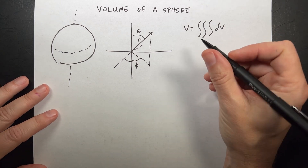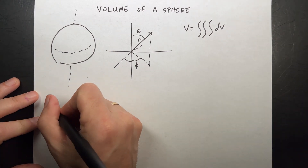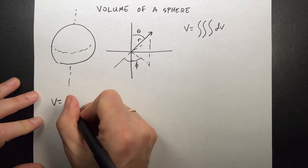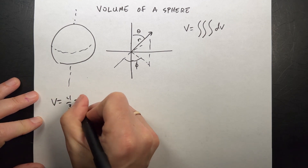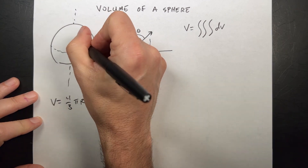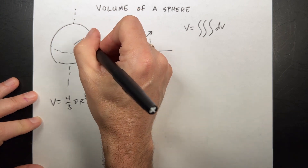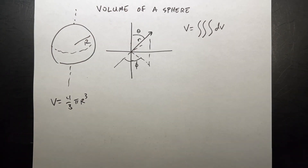Let's find the volume of the sphere. Of course, we already know the answer. The volume of the sphere is 4/3 π r³, where r is the radius of the sphere.